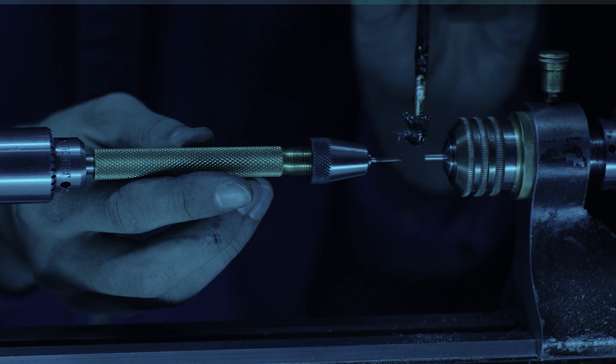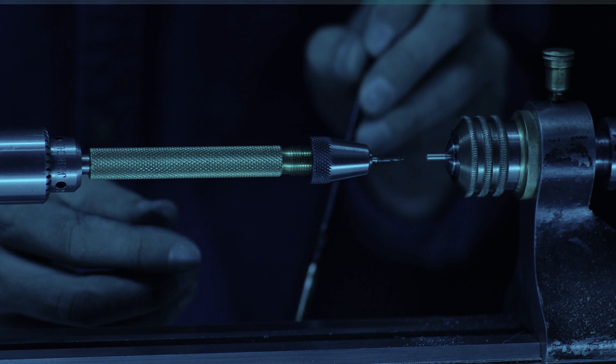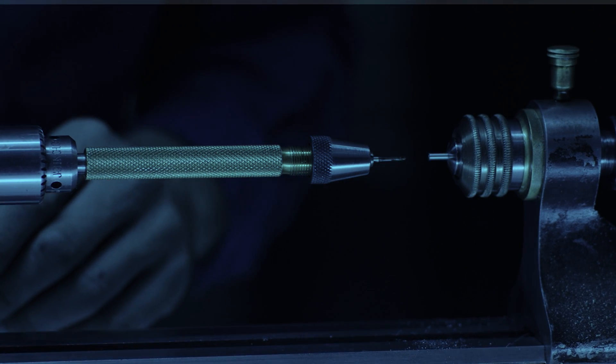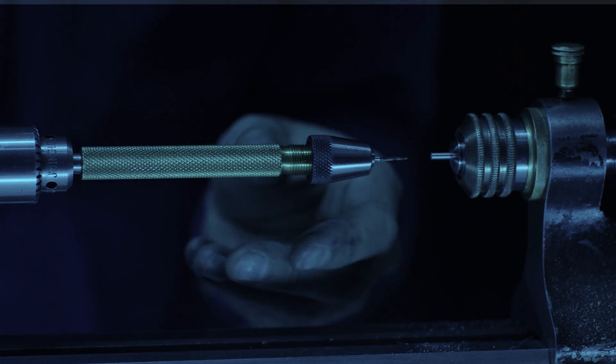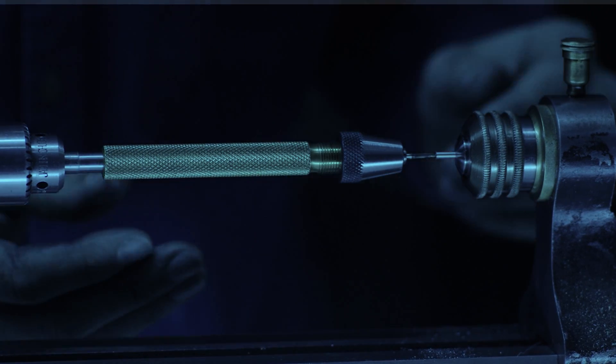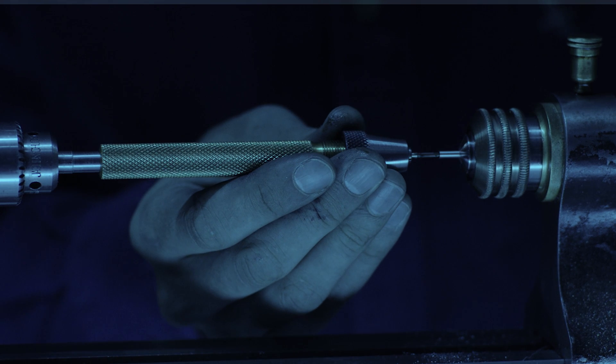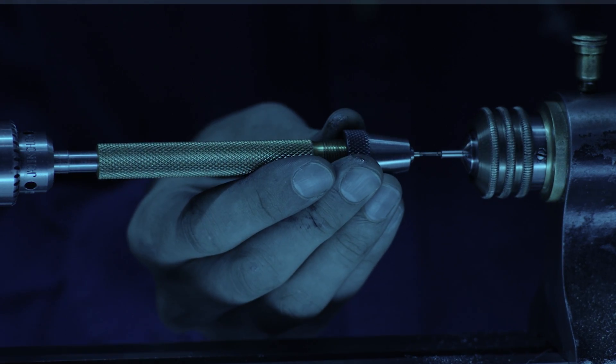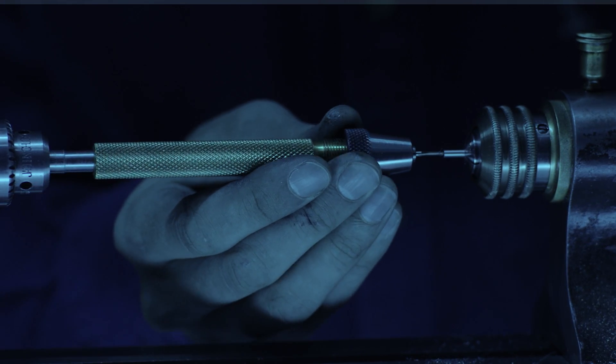Once drilled, a 1.4 millimeter tap is mounted in a pin vise in the tailstock of the lathe. A small amount of cutting grease is applied and the thread is then tapped by hand. Great care must be taken during this sensitive operation to avoid breaking the tap and ruining the part.